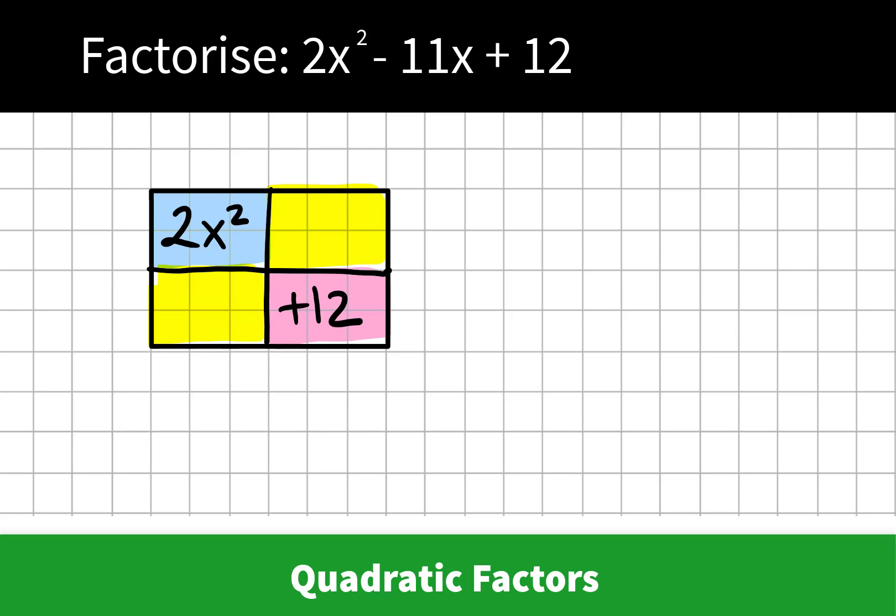The other diagonal, I've colored in yellow here, we know that this must add up to negative 11x. This is where the x term goes. I'm going to use this little area for my rough work.